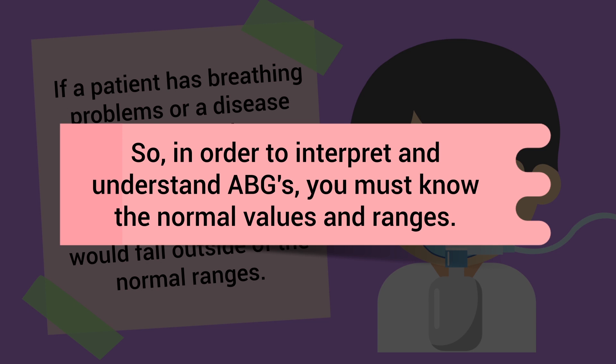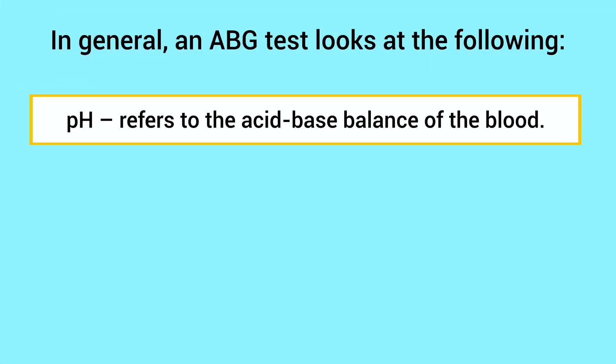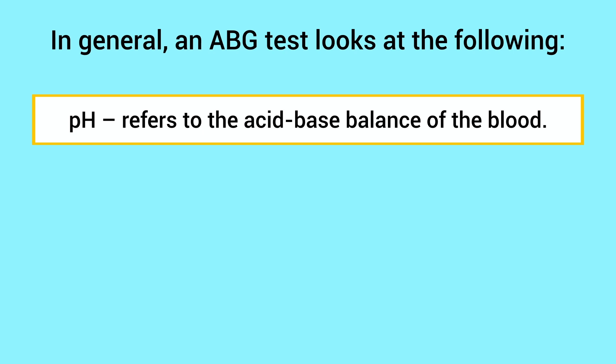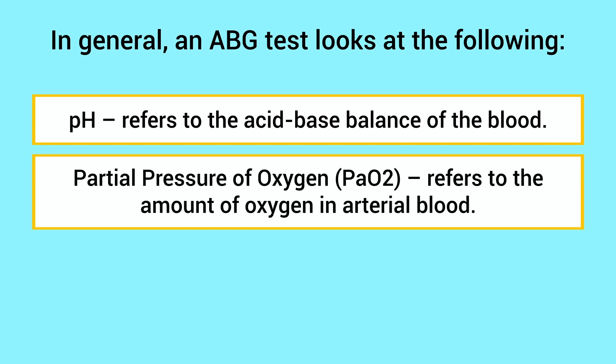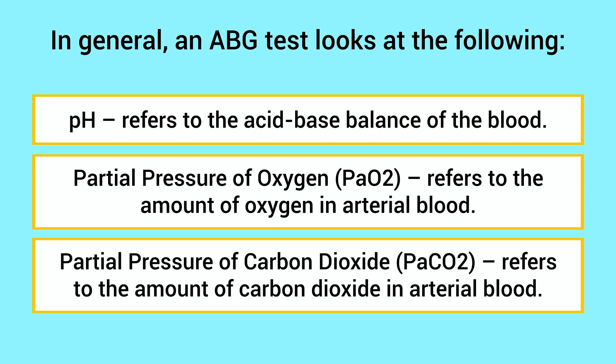In order to interpret and understand ABGs, you must know the normal values and ranges. An ABG test looks at the following: first, you have the pH, which refers to the acid-base balance of the blood. Then you have the partial pressure of oxygen, or PaO2, which refers to the amount of oxygen in arterial blood. Then you have the partial pressure of carbon dioxide, or PaCO2, which refers to the amount of carbon dioxide in arterial blood.